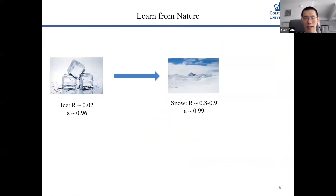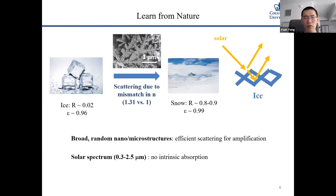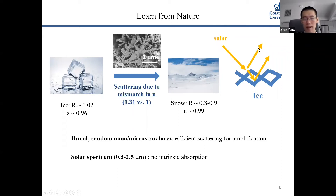We know that ice is transparent, meaning it has low solar reflectance, but snow — which is made of ice — is highly reflective. The reason is that there are lots of nanostructures inside snow. At the interfaces between ice and air, due to mismatch in refractive index, light is scattered. In the solar spectrum, ice is transparent and not absorptive, so scattering reflects sunlight back to the sky, and after many reflections all sunlight is reflected, giving very high reflectance.